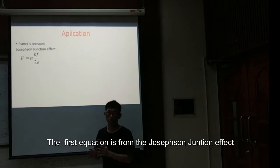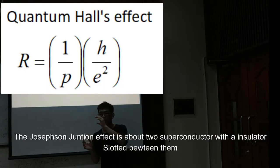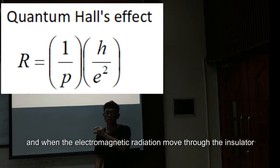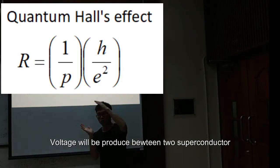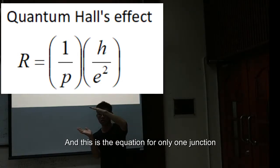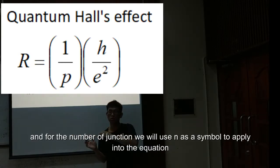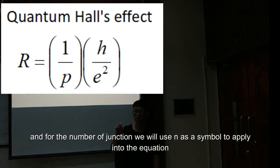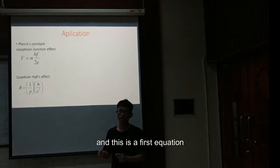The first equation is from the Josephson Junction effect. Josephson Junction effect is about two superconductors with an insulator sandwiched between them. When there is electromagnetic radiation through the insulator, voltage will be produced between the two superconductors. The voltage will be equal to h times f over 2e. This is the equation for only one junction. We can manipulate the voltage by increasing the junctions. For the number of junctions, we will use N. The final equation is V equals N times h times f over 2e.